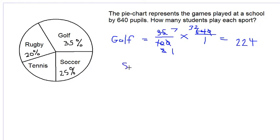Let's move on to soccer. Soccer is 25% as a fraction is 25 over 100, multiply by 640 over 1. 25 can go into 100 four times. 4 into 1, 4 into 640 now will give 160. 1 times 160 is 160 students.